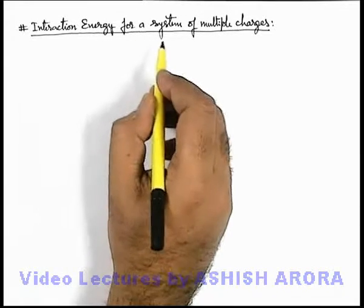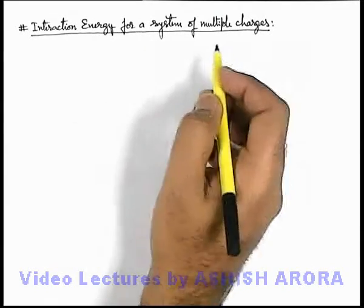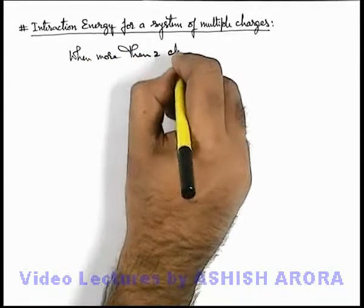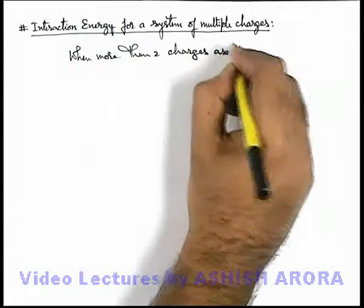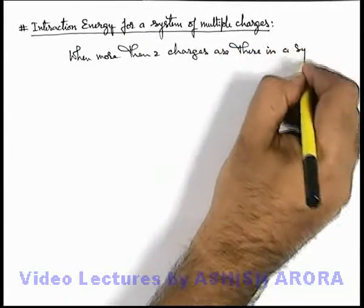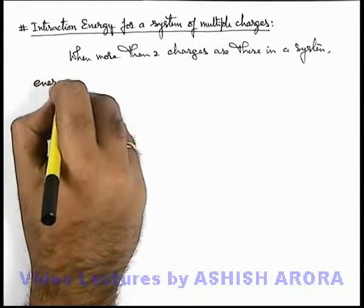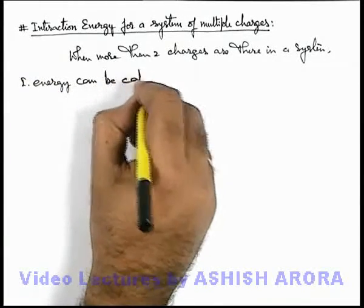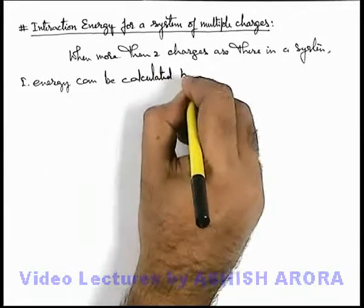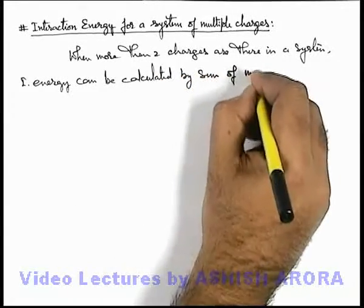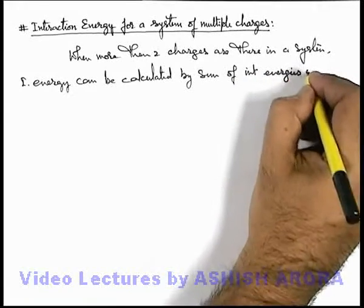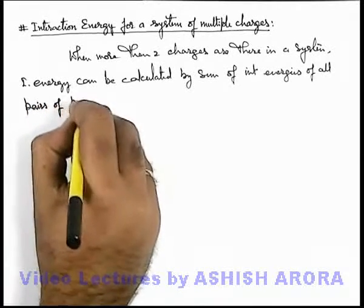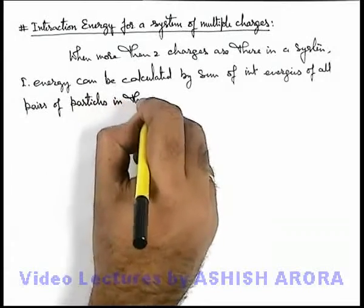Let us study interaction energy of a system of multiple charges. For multiple charges, we can simply write: when more than 2 charges are there in a system, always keep in mind that the interaction energy can be calculated by the sum of interaction energies of all pairs of particles in the system.